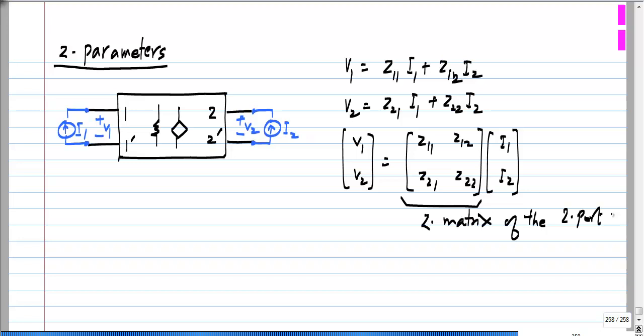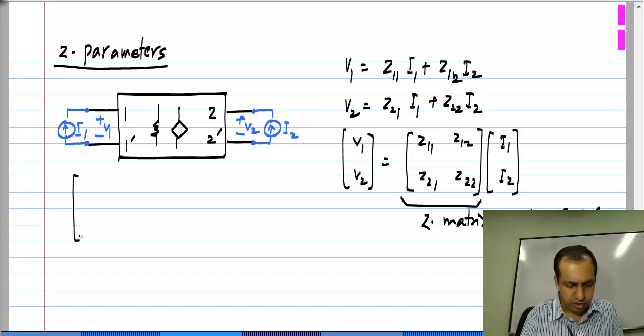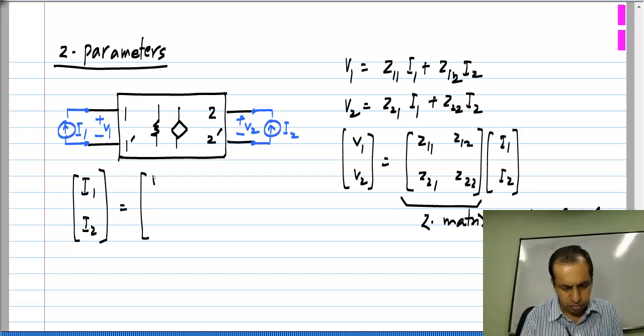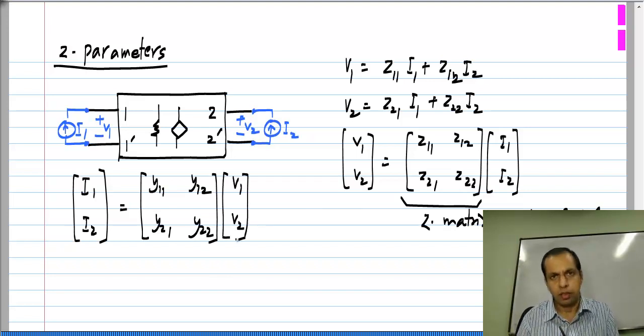So, the definition is similar to the Y parameters except that here currents are independent variables and voltages are the dependent variables. Now, if you compare this to Y parameters, what did we have? In case of Y parameters, we had I1, I2 to be equal to Y11, Y12, Y21, Y22 times V1 and V2.